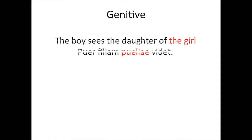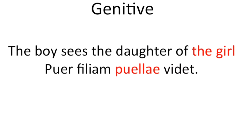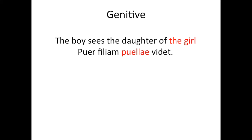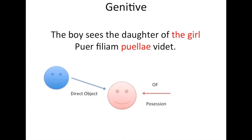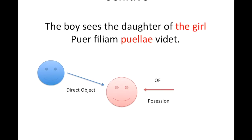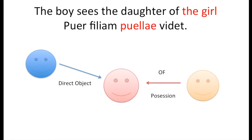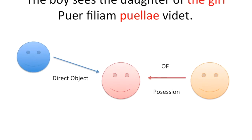The genitive case. For example: 'The boy sees the daughter of the girl.' In English we might say 'the boy sees the girl's daughter,' with an apostrophe S. But translated literally, it's 'the daughter of the girl.' So the genitive case can be translated as 'of,' and it shows possession. The boy sees the daughter — that's the direct object — of the girl, showing possession.